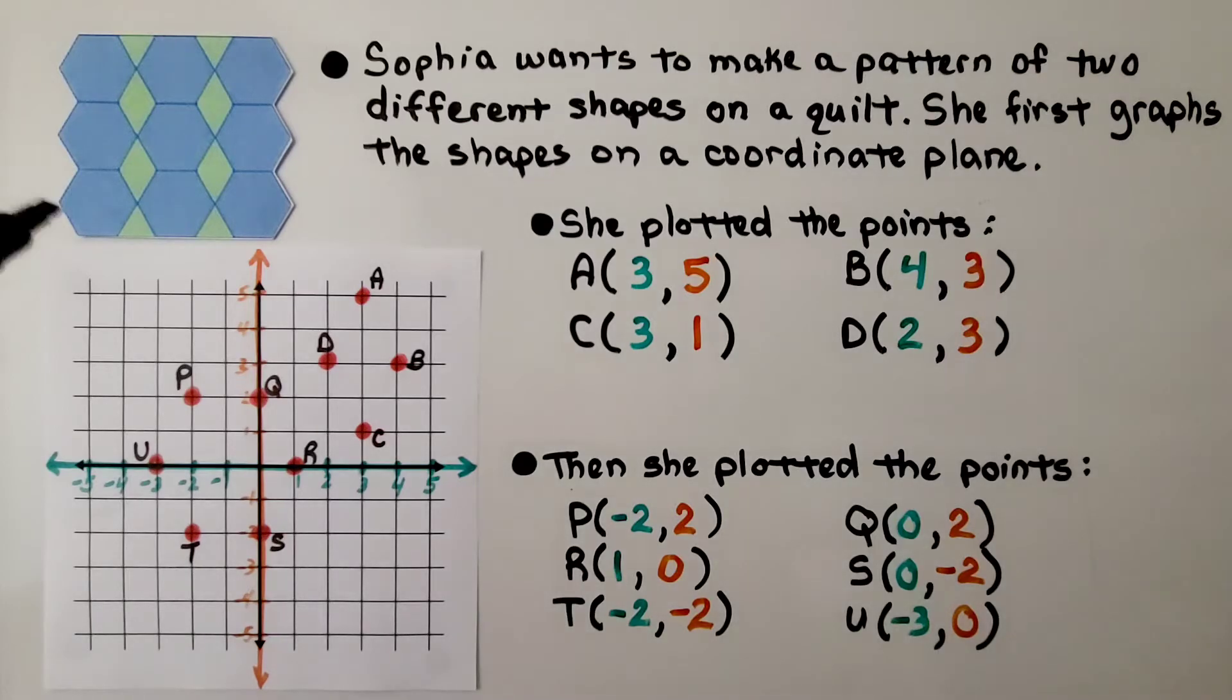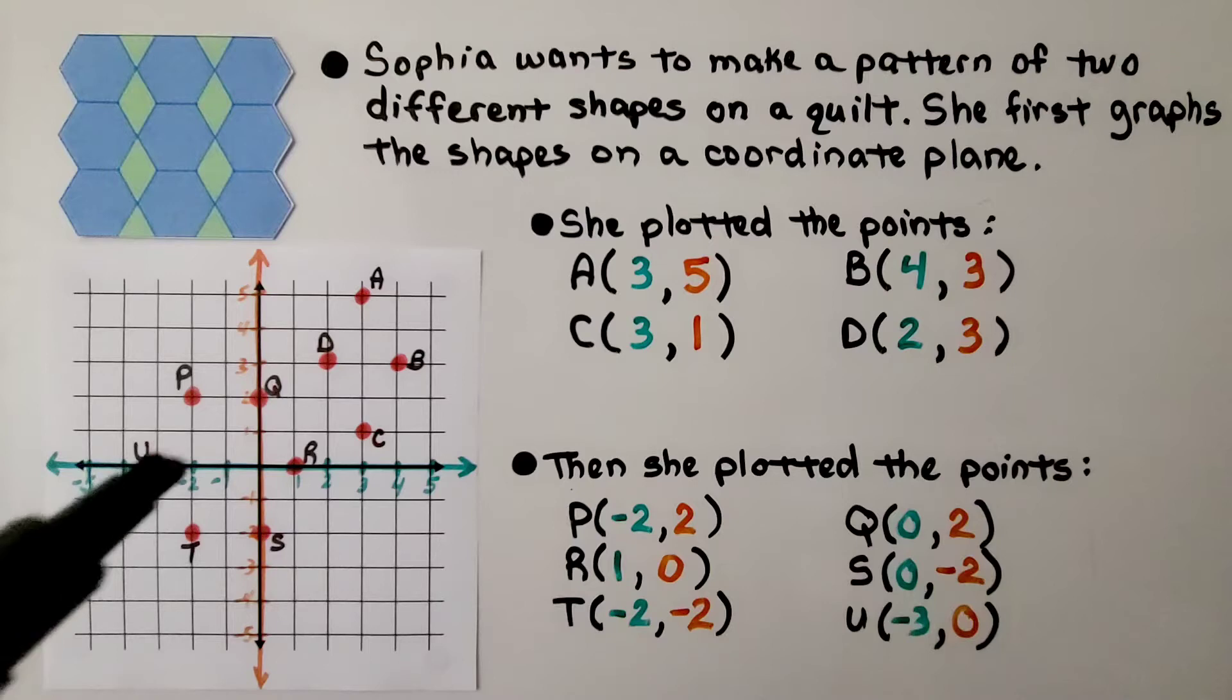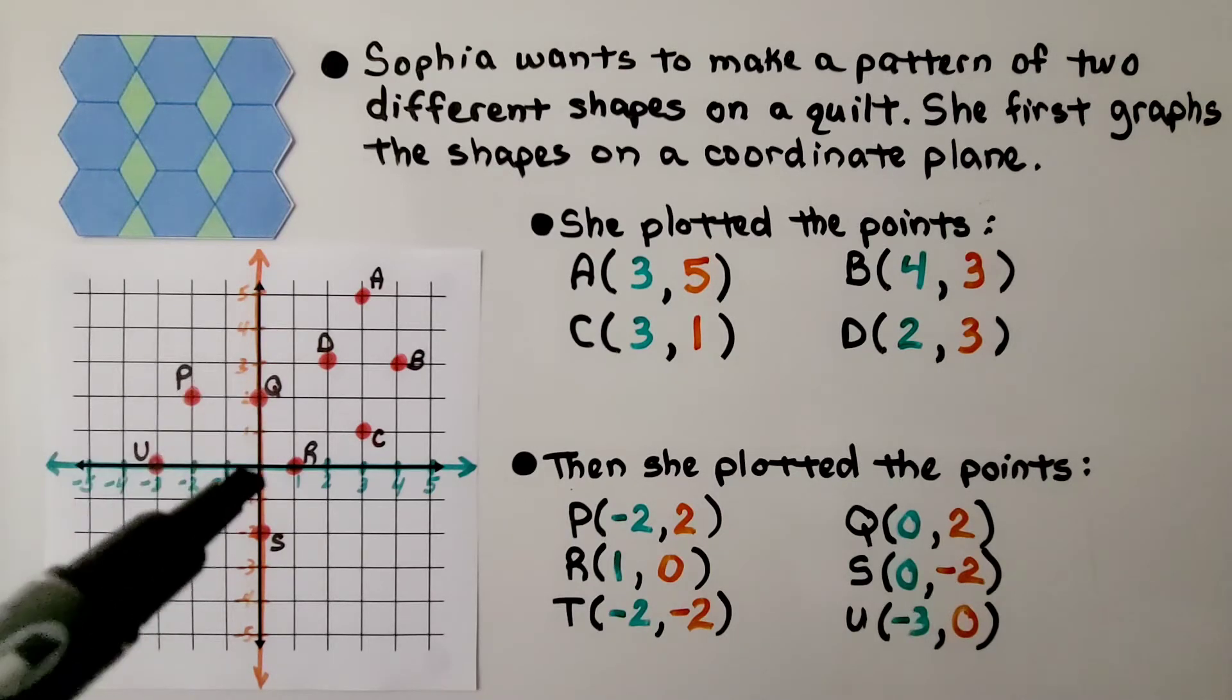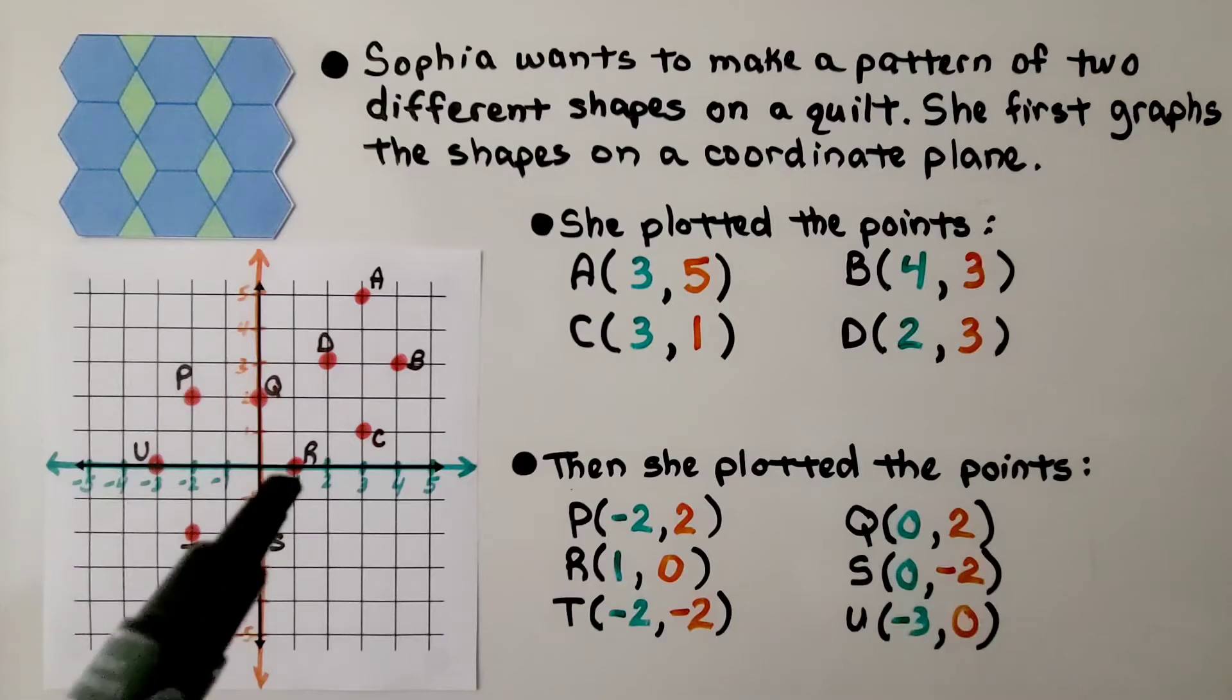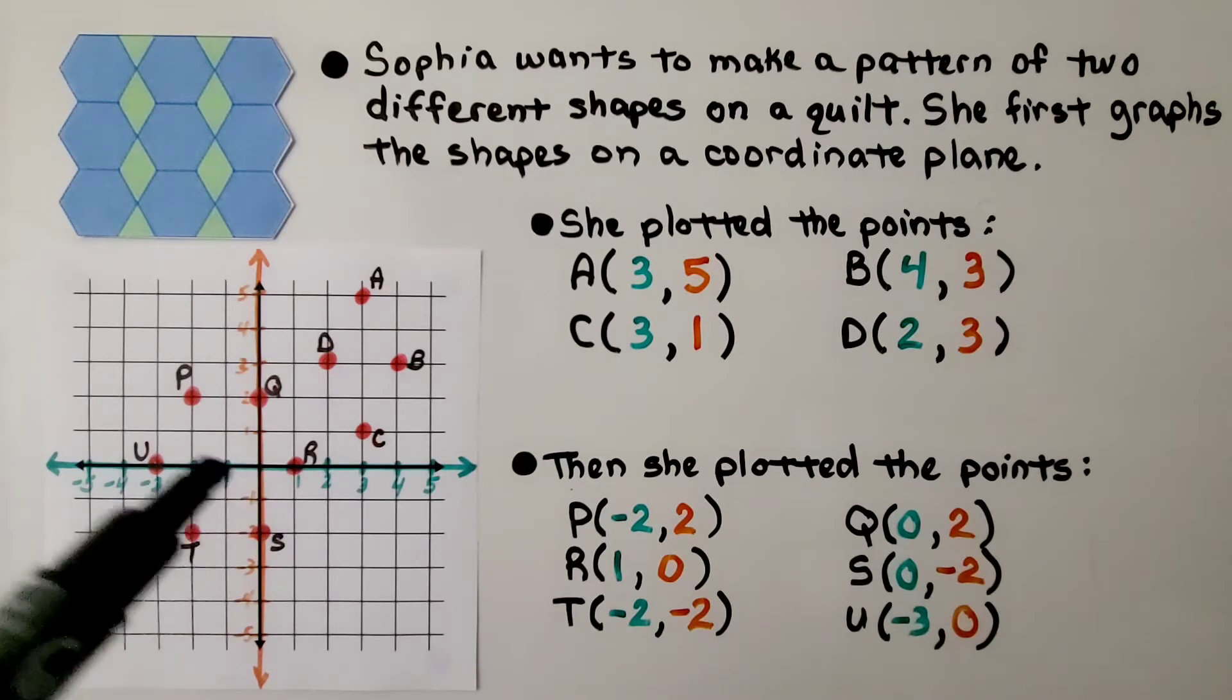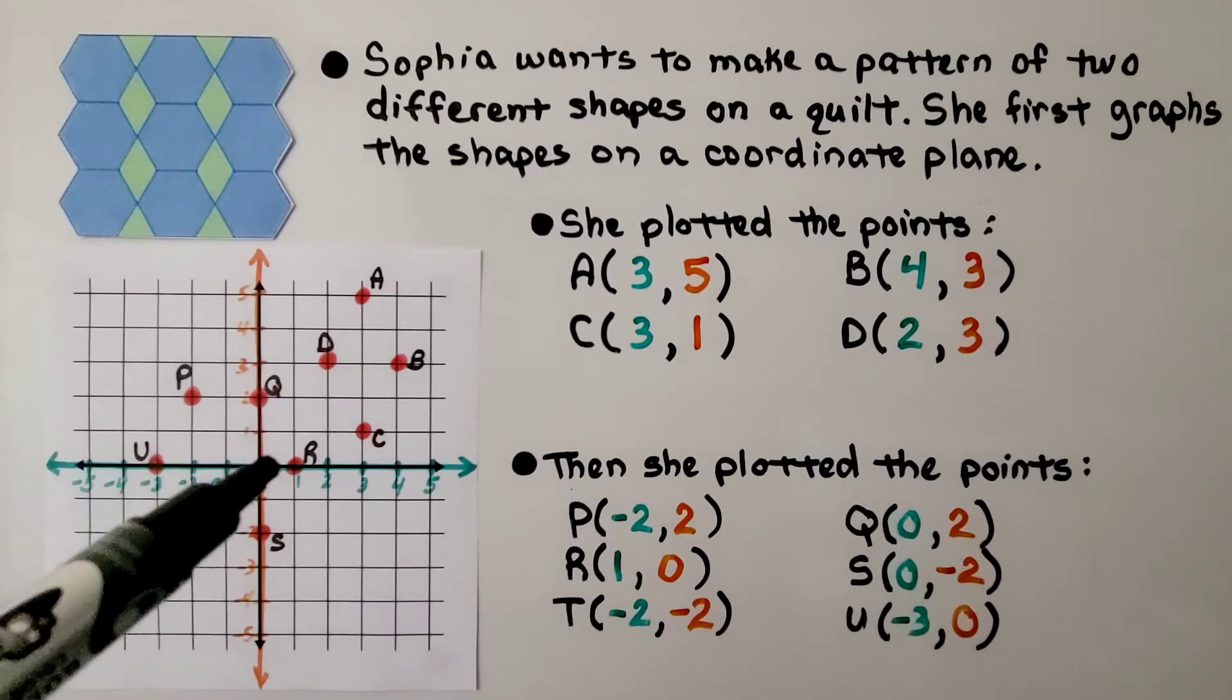Then she plotted the points for the blue shape. And we've got points P at negative 2 for x and 2 for y. Q is at 0 for x. If this is negative 1 and that's 1, so that must be 0. It's at 0 for x and 2 for y. Point R is at 1 for x and 0 for y.